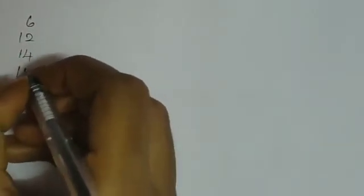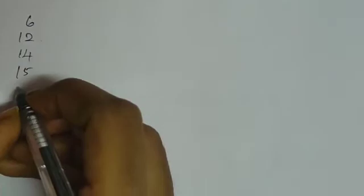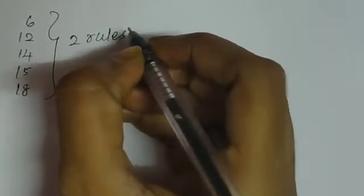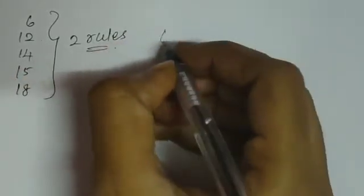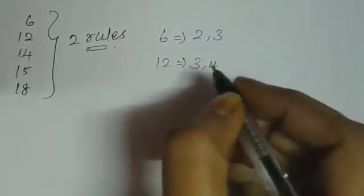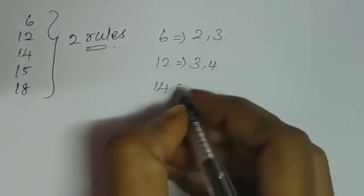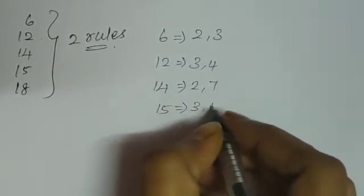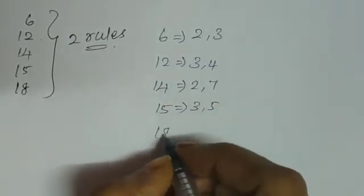Next combo is 6, 12, 14, 15, and 18. In these five, the common factor is that two divisibility rules must be satisfied. For 6: 2nd and 3rd rules. For 12: 3rd and 4th rules. For 14: 2nd and 7th rules. For 15: 3rd and 5th rules. For 18: 2nd and 9th rules.